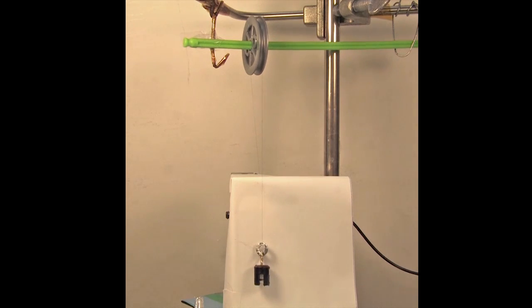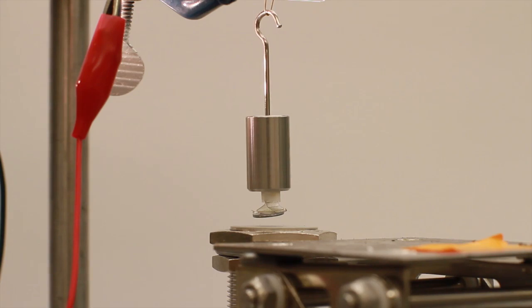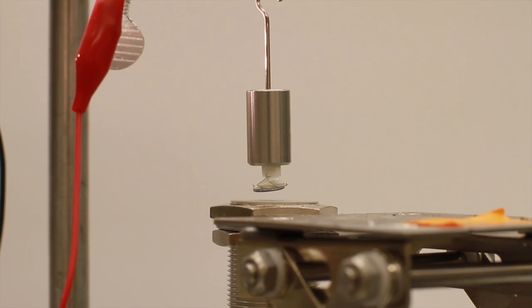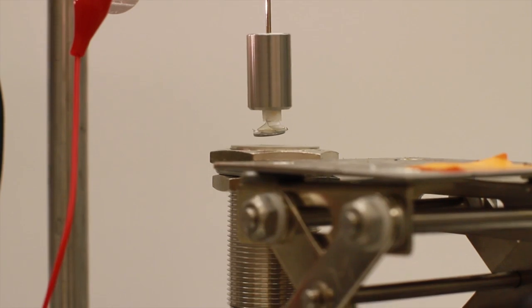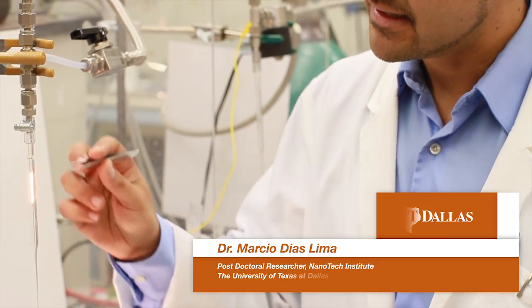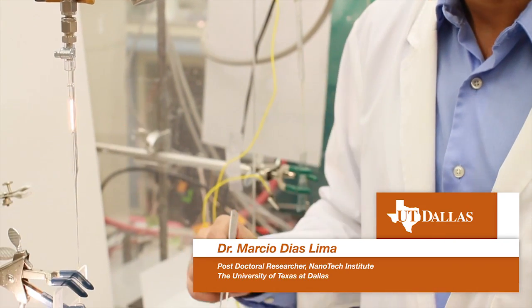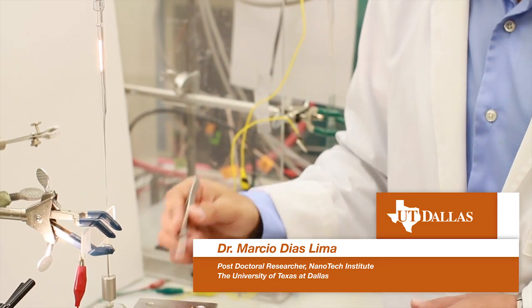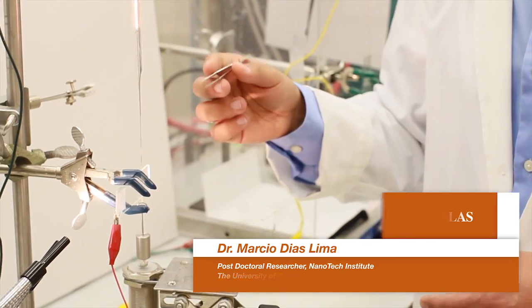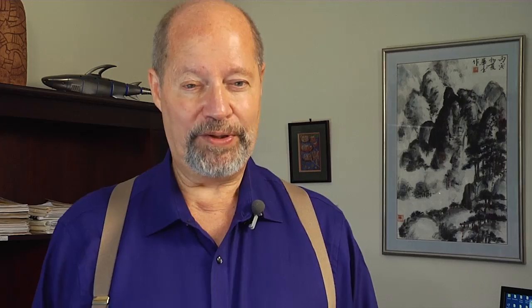These artificial muscles that we've developed can lift weights that are enormous compared to their dimensions. The weight the artificial muscle is lifting right now is about 100,000 times heavier than the muscle itself. We've powered these artificial muscles using a light flash just from an ordinary 100 watt lamp.